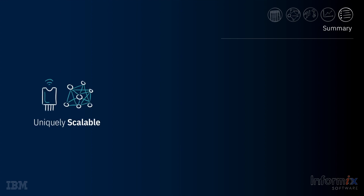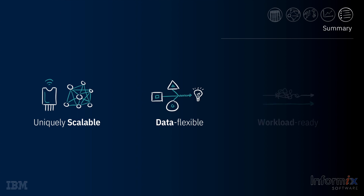In summary, Informix is uniquely scalable — it can run in the smallest edge-of-network device, embedded within an application, or in the largest computer systems, as a standalone node or cluster. Regardless of the footprint, the engine's features, functionality, and ease of use are exactly the same. It is data-flexible: with its object-oriented core, it supports all traditional SQL data types as well as a wide range of extended and user-defined data types, enabling you to solve complex data problems easily. Informix is ready for any type of workload, from capturing, analyzing, and storing sensor data in Internet of Things format, to standard OLTP processing of multiple millions of transactions per second, to complex data warehousing, all within a practically always-on environment.